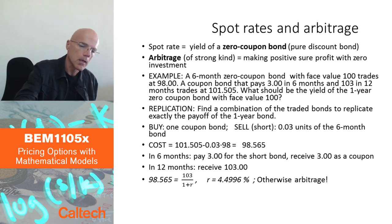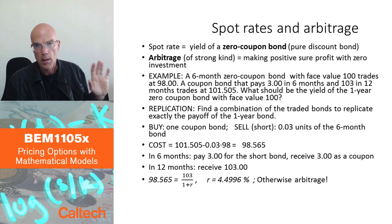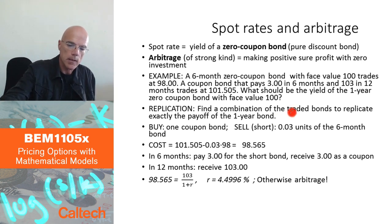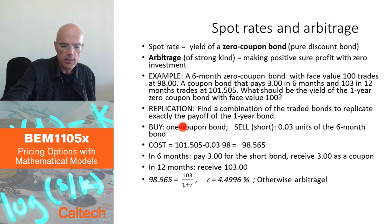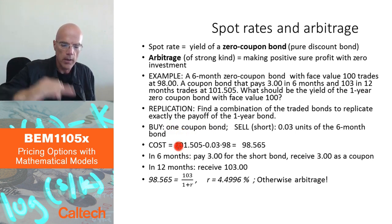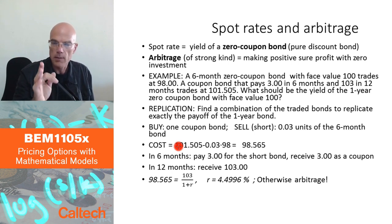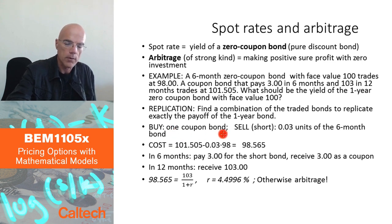I'm going to try to replicate the payoff of a one-year zero coupon bond using a six-month zero coupon bond and the one-year coupon bond. I'll buy the coupon bond — it doesn't matter whether I buy one or a fractional number of units, I can scale correctly. I just want zero payments after six months.